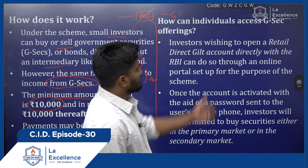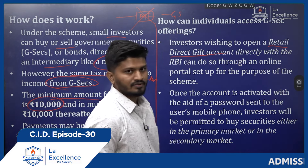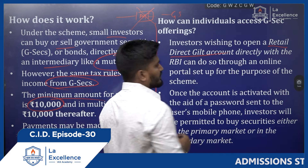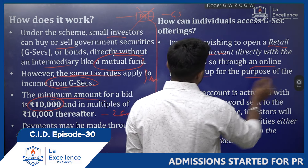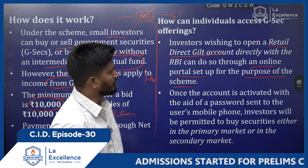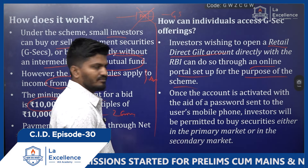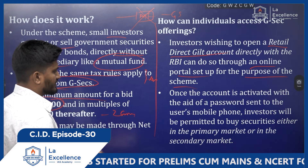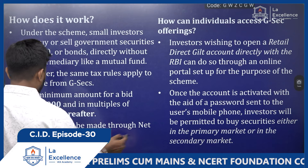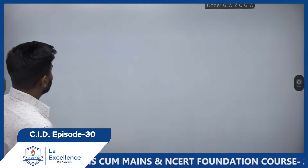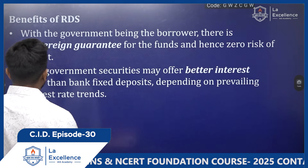To access government securities, an individual must first open a Retail Direct Gilt account directly with the RBI through an online portal set up for the purpose. Once the account is activated, a password is generated and the investor can start trading in government securities.